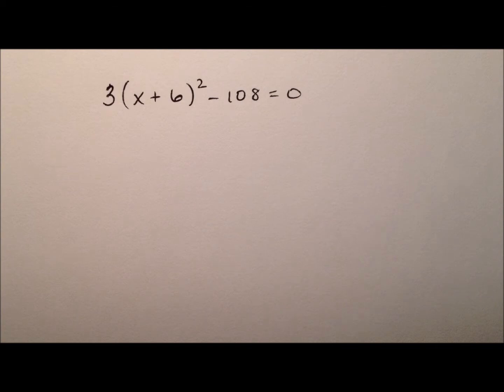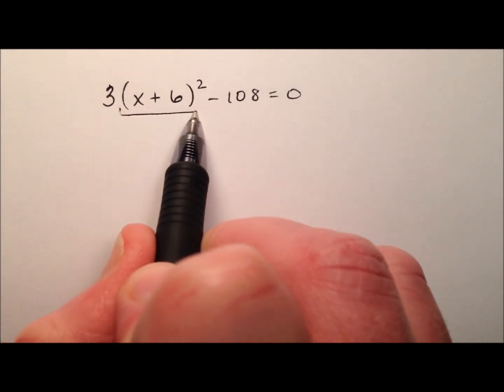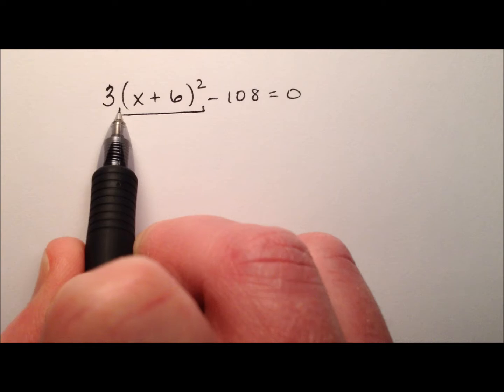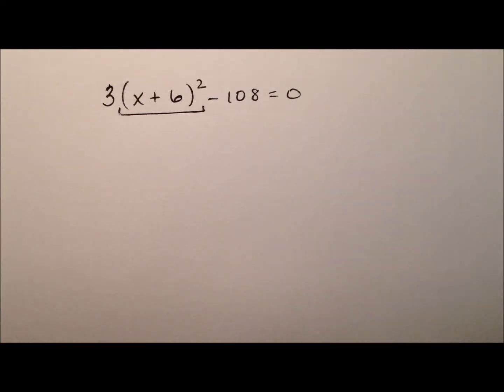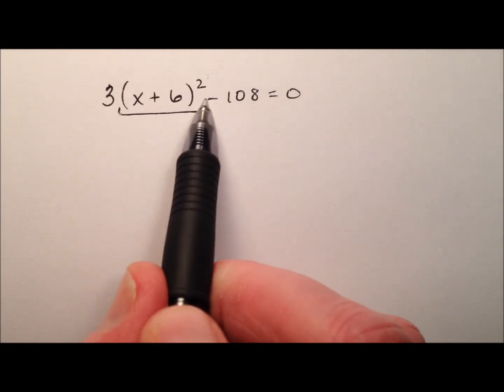The notion of using the square root principle to solve this equation is because we have this perfect square right here. We have this quantity x plus 6 and it's being squared. So in order to use the square root principle, we'll first have to isolate this expression on the left side of the equation by itself.